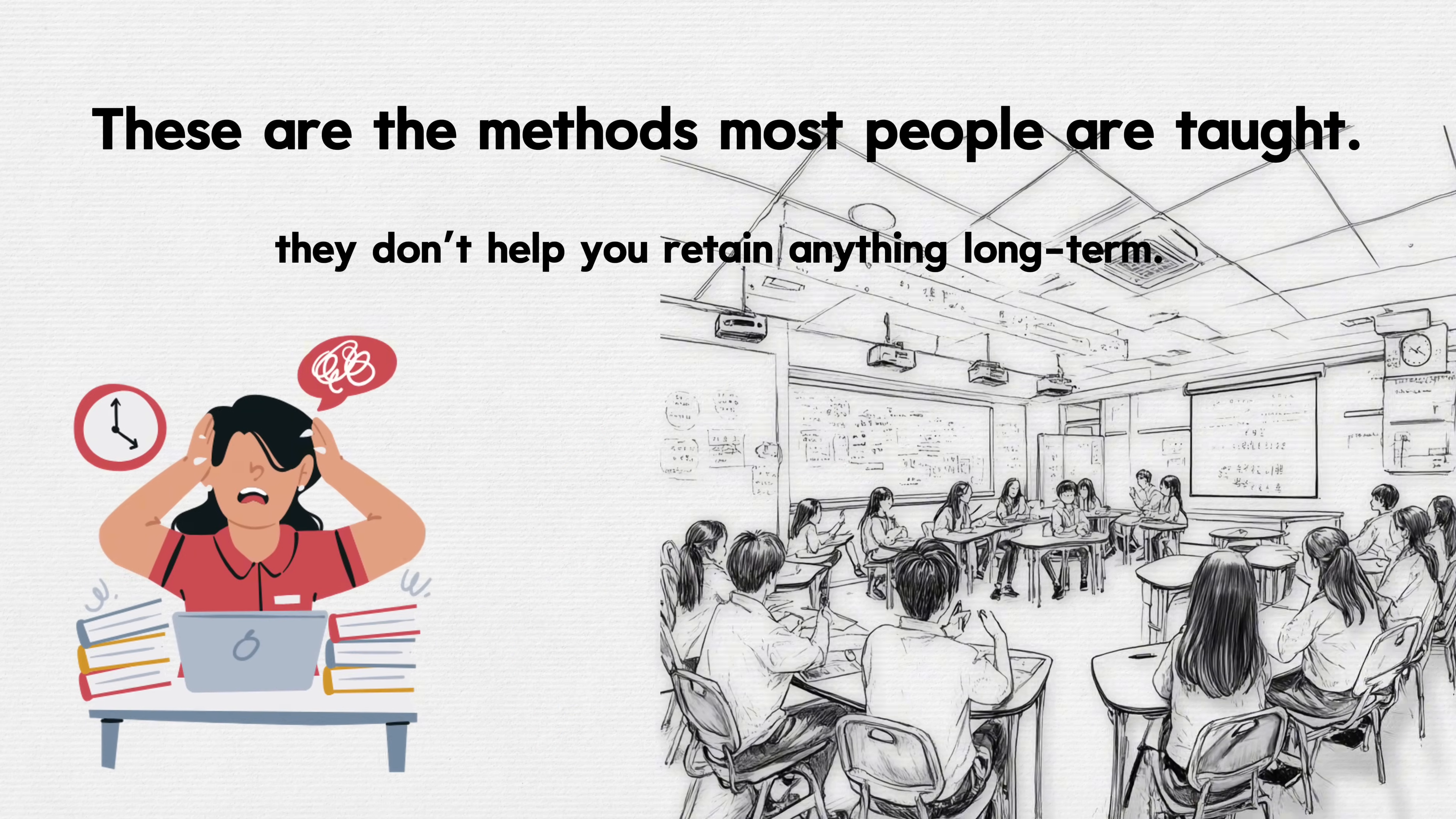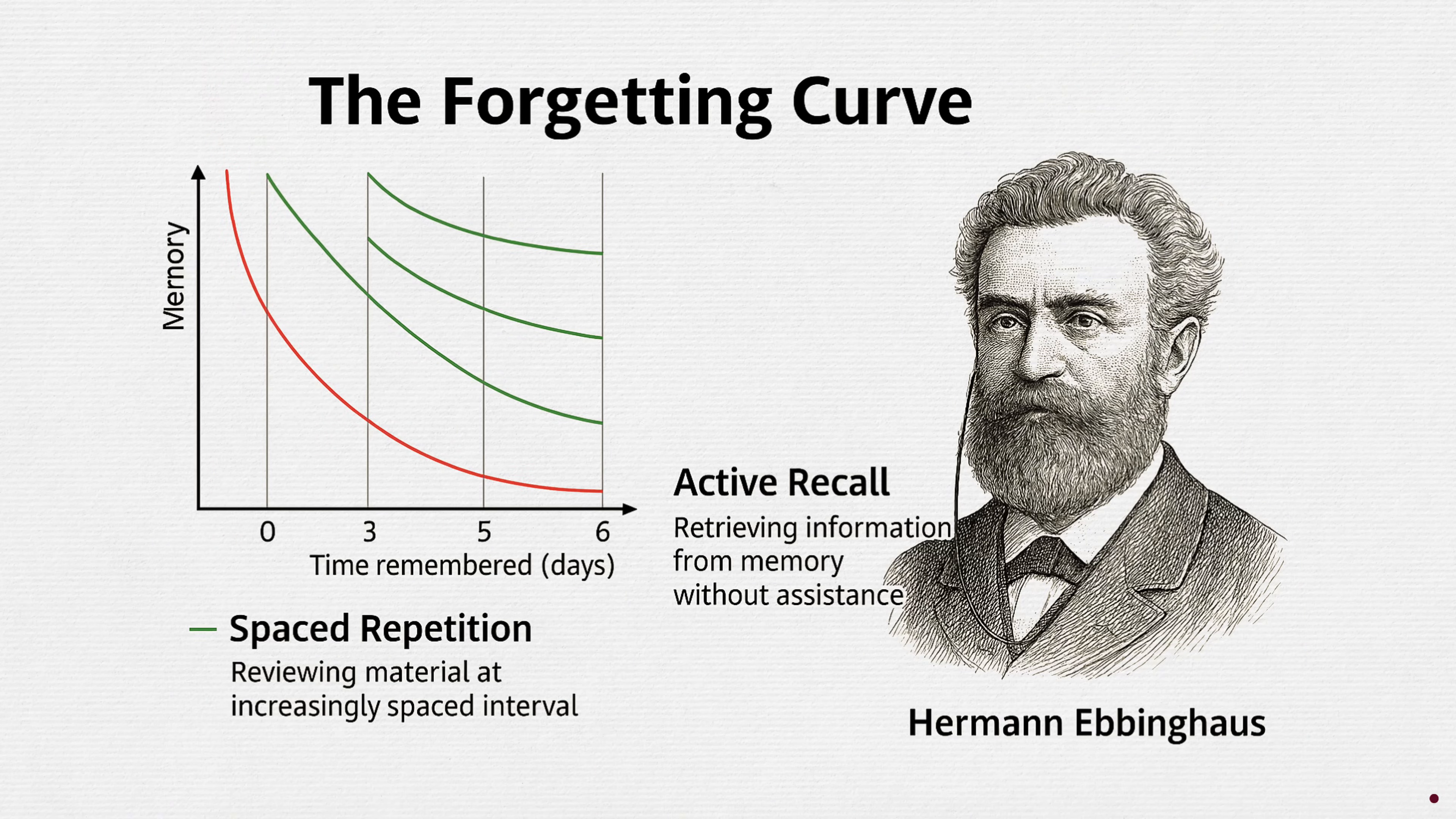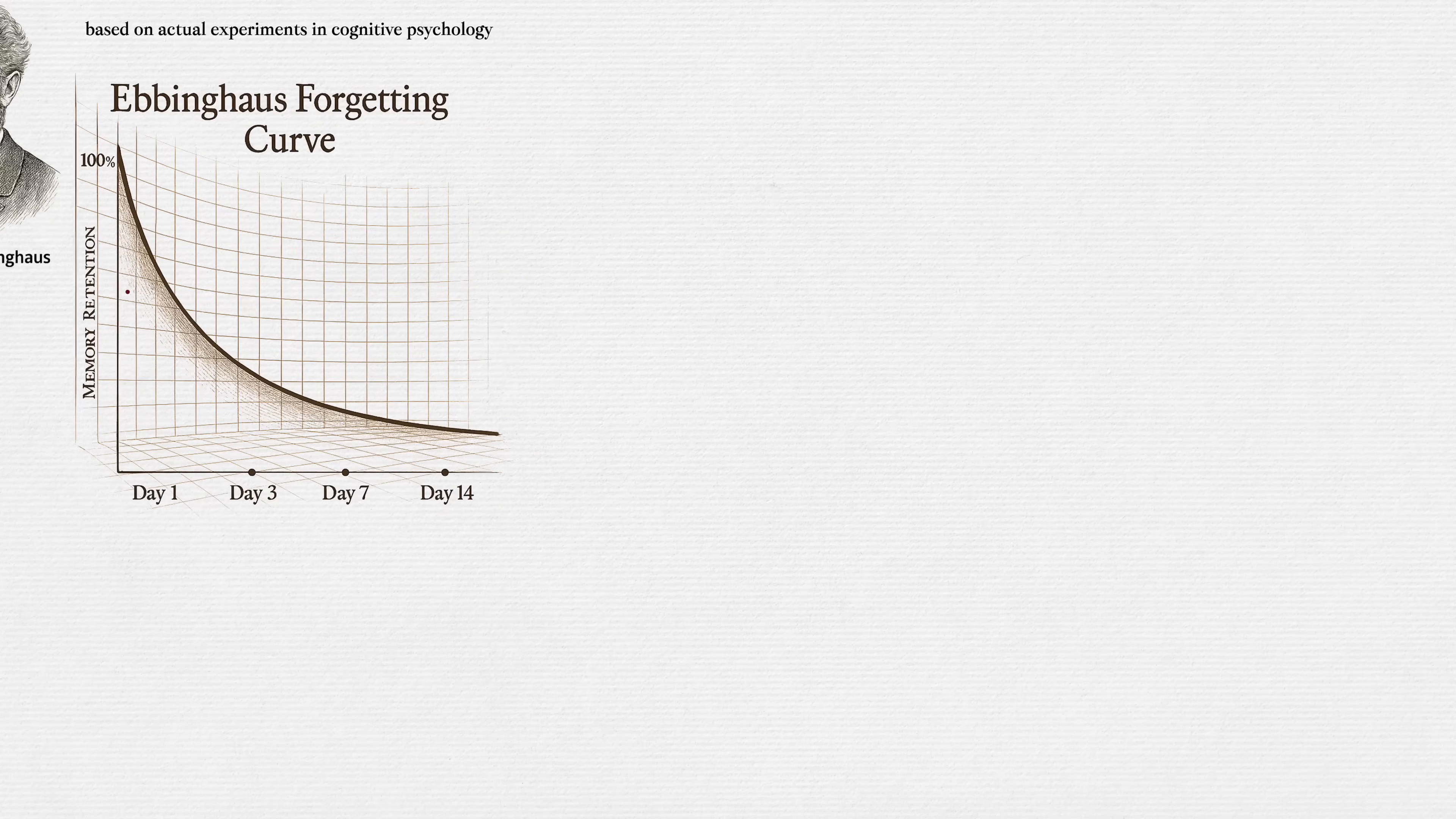Here's what nobody teaches you in school. Memory doesn't fade slowly. It fades fast. This graph, the Ebbinghaus Forgetting Curve, is based on actual experiments in cognitive psychology. It shows that after learning something once, you can forget over half of it within 24 hours. And nearly all of it by the end of the week,